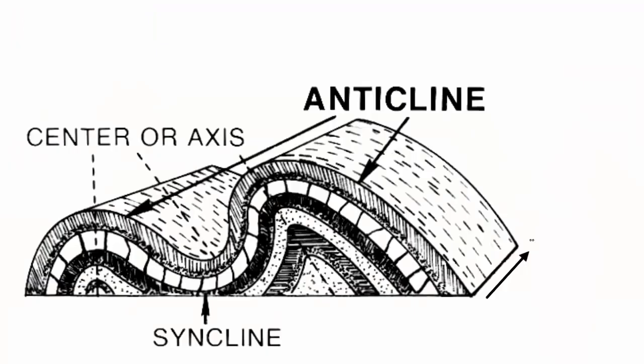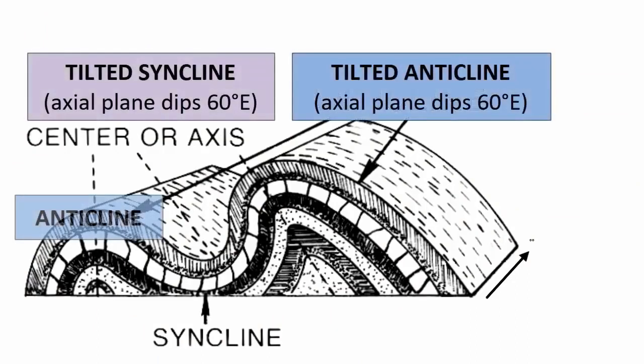However, sometimes the axial plane can dip itself. In such cases, we call the fold a tilted fold and give the actual dip angle of the axial plane. For example, in this image, the anticline on the left is untilted and upright, but on the right, both the syncline and anticline have axial planes dipping eastward. The angle looks to be roughly 60 degrees east — 90 degrees would be vertical, 0 degrees would be horizontal. So we call the rightmost folds syncline and anticline with hinge axes dipping 60 degrees east.